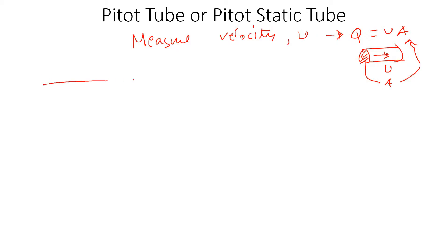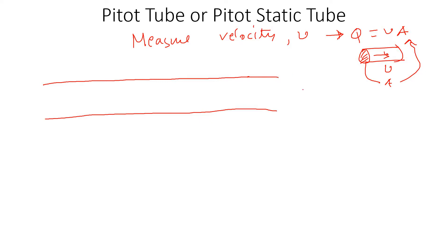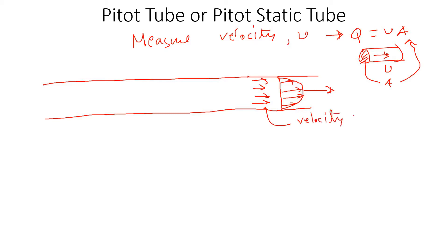Let me show you how a Pitot tube works and how it looks. Imagine this is the pipe where we have flow going on. If I try to draw the velocity profile, it's going to look something like this. When the fluid is flowing through this pipe, the particle that touches the wall has zero velocity — velocity at the wall is zero — and the highest velocity would be at the middle. So the velocity profile goes from zero at the wall and increases toward the middle.